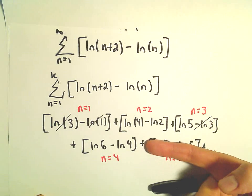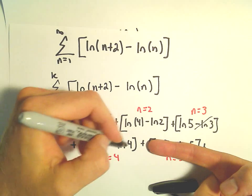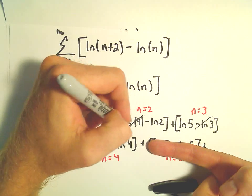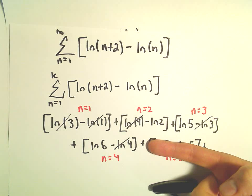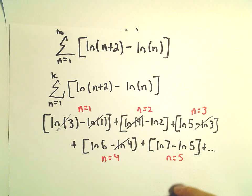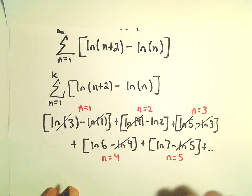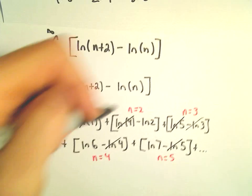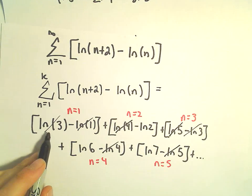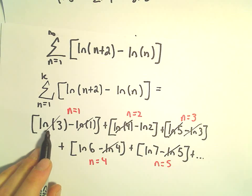Well, if we sum up the first four terms, it looks like the ln of 4 and the negative ln of 4 are going to cancel out. If we sum up the first five terms, now it looks like the ln of 5 and the negative ln of 5 will cancel. So generically, it looks like the ln of 3 would get canceled out.